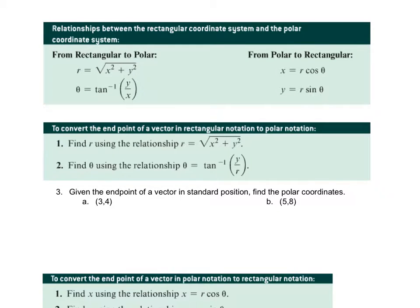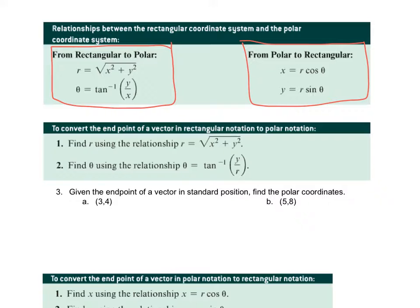There are conversion factors depending on which direction you're going. If they start you in rectangular and ask you to go to polar, you find r by taking √(x² + y²), and find theta using inverse tangent. These are formulas that would be given on your test. If they start you in polar and want rectangular, you'll use the other conversion factors, which we'll do in a moment.